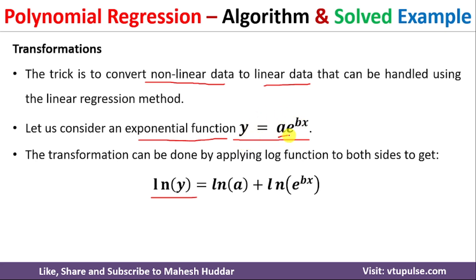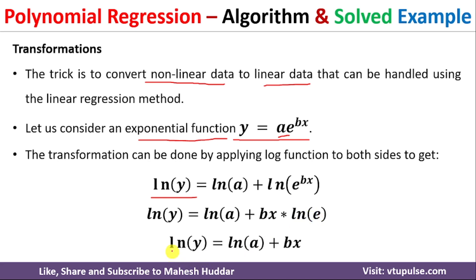ln of y is equivalent to ln of a plus ln of e raised to bx. Now, ln of e raised to bx can be written as bx multiplied by ln of e, and ln of e is always equal to 1. So the final equation is: ln(y) = ln(a) + bx. This is a linear function because there is no exponential term. Once you convert nonlinear data to linear, apply the linear regression model, predict the dependent variable, and then convert the result back to nonlinear form by reversing the process.